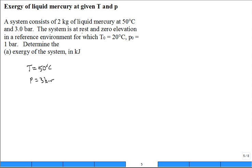The system is at rest and zero elevation, and the dead state temperature is 20 degrees C, 293 Kelvin. Dead state pressure 1 bar, which is how many kilopascal? 100 kilopascal for 1 bar.